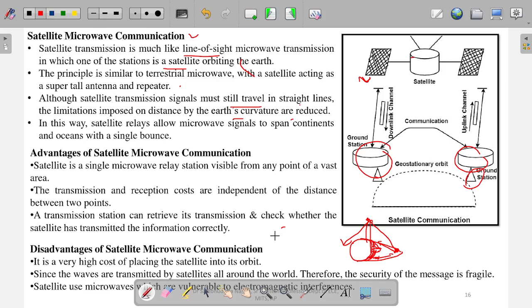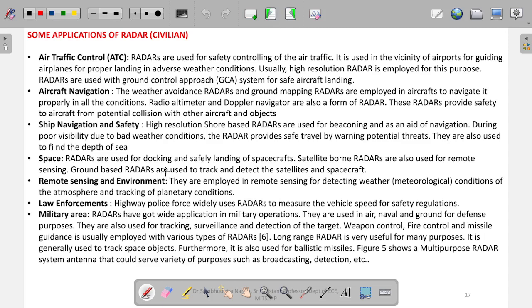What are the disadvantages? It is high cost—obviously putting a satellite in orbit requires rocket launcher and all. Since the waves are transmitted by satellites around the world, the security of the message is fragile. This wave is open to everyone; anyone can receive the signal and decode it. Security is a matter there. Nowadays, it is not a major issue; the signals are highly secret. Satellite microwaves are vulnerable to electromagnetic interference. When it comes to earth, so many other antennas are there and interference can happen. That is one of the major problems with satellite communication, but nowadays with other coding technologies, interference is not zero though it is avoided.